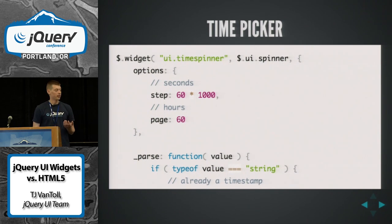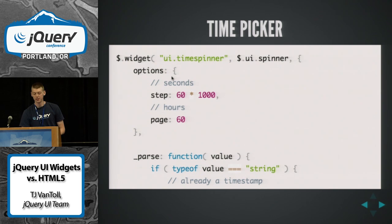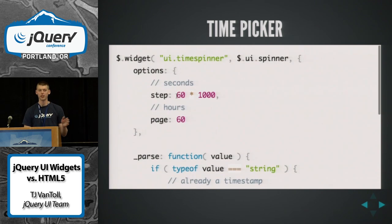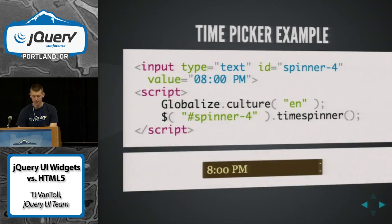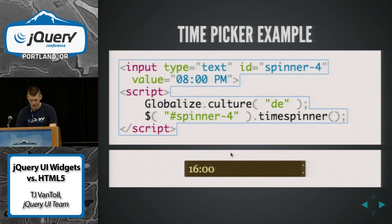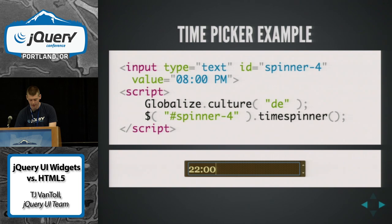The big thing is that these widgets are very extensible as well. This is an example on jQuery UI's demo site showing how, since Spinner is built on the widget factory, you can extend it pretty easily to add some custom behavior. This is just a few lines of code — defaulting the step value to seconds, the page value to hours, and a couple of lines of code to parse the values back and forth. From that, you get a little time picker where up and down moves the seconds, paging moves hours, and you can change the culture as well.